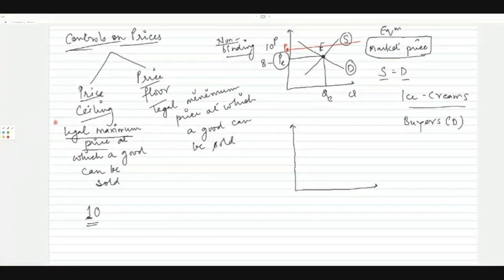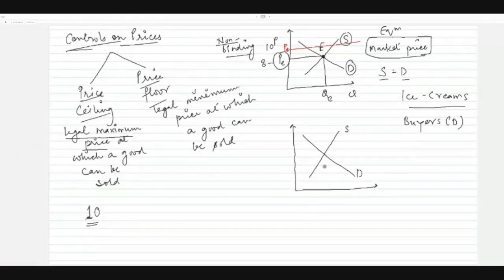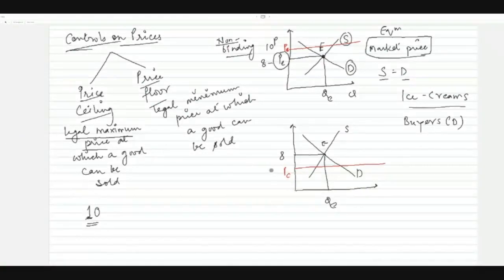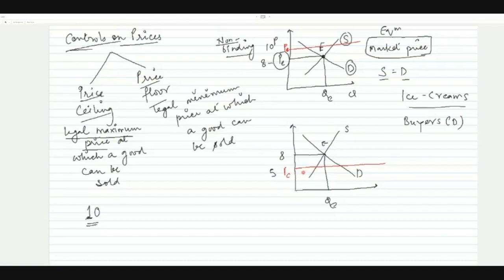The second case is where the price ceiling becomes binding. This is the demand curve, this is the supply curve, and this is your equilibrium price and quantity. Now the government says buyers are complaining that rupees 8 is too much for ice cream. So the government introduces a price ceiling at a price less than rupees 8 — say, rupees 5. The market price is rupees 8, but sellers cannot charge more than rupees 5. This is where the price ceiling becomes binding.